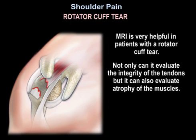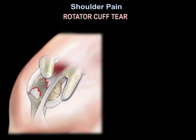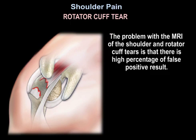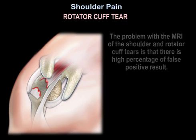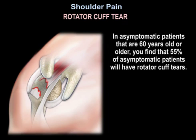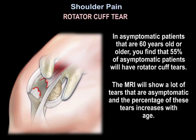MRI is very helpful in patients with rotator cuff tear. Not only can it evaluate the integrity of the tendons, but it can also evaluate atrophy of the muscles. The problem with MRI of the shoulder and rotator cuff tears is there's a high percentage of false positive results. In asymptomatic patients that are 60 years old or older, 55% will have rotator cuff tears. So the MRI will show a lot of tears that are asymptomatic, and the percentage of these tears increases with age.